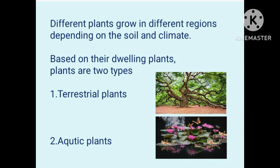Do the same kind of plants grow in all the regions? No. One important fact is that different plants grow in different regions, depending on the soil and climate. Based on their dwelling, plants are of two types: terrestrial and aquatic.